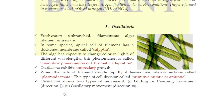Oscillatoria shows two types of movement. One is called gliding or creeping movement, where the filament moves in the direction of its length — it moves in one direction along the filament axis. The second is oscillatory movement, where as it moves forward, the filament oscillates left and right while advancing.